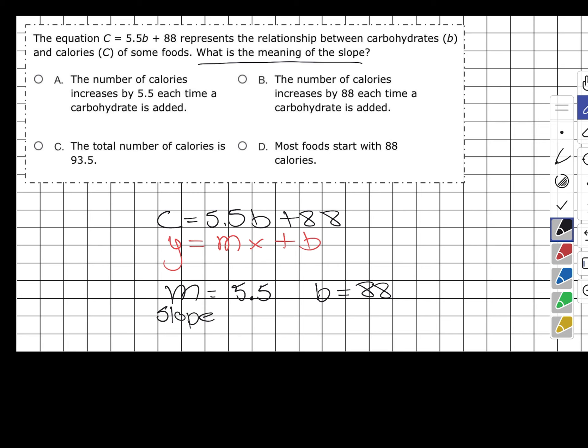Even though answer choice D is correct that most foods start with 88 calories, 88 is our Y-intercept — they didn't ask us for that. So 88 is not what we're looking for, nor is answer B, because that's also the Y-intercept. The 93.5 in answer C came from adding 5.5 and 88 together, which is not what was asked. So the answer is A — the calories increase by 5.5 each time a carbohydrate is added.